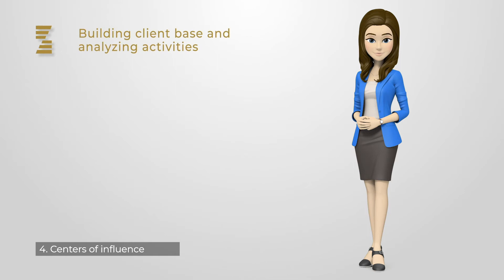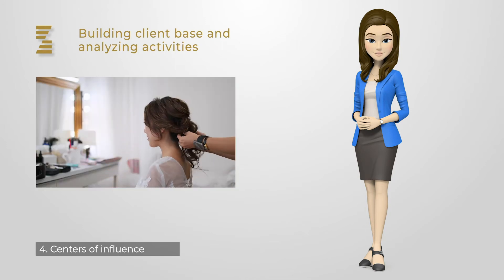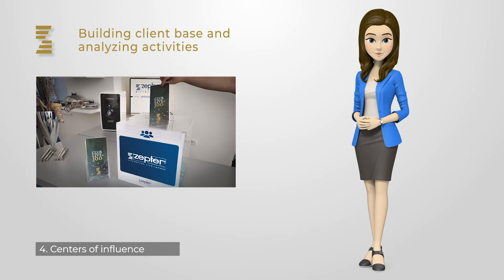Centers of Influence are individuals or companies who you personally know, or are your clients, who are happy to help you in organizing your client base with planned activities over a period of time, not only on one occasion. For example, in hairdressing studios, beauty salons, etc., display in a visible place the forms for joining the Live 100 Club, and next to them a Zepter box in which completed forms can be placed. The owner of the salon arranges raffle lotteries with a prize suitable for that type of business — for example, a hair dryer, massage device, or Zepter Cosmetics. The owner only needs to suggest to existing clients that they fill in the CL100 forms to participate in the lottery draw.